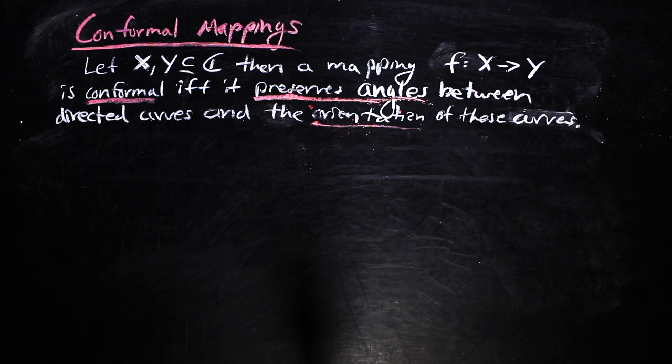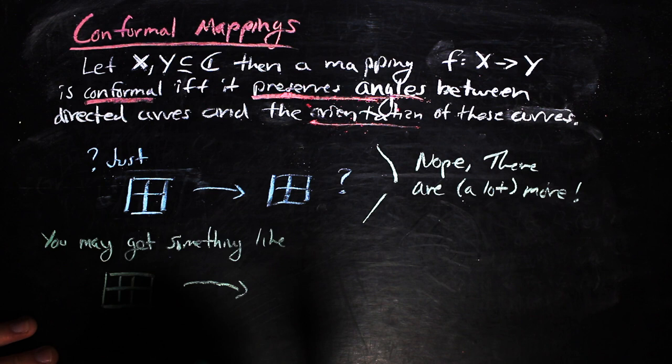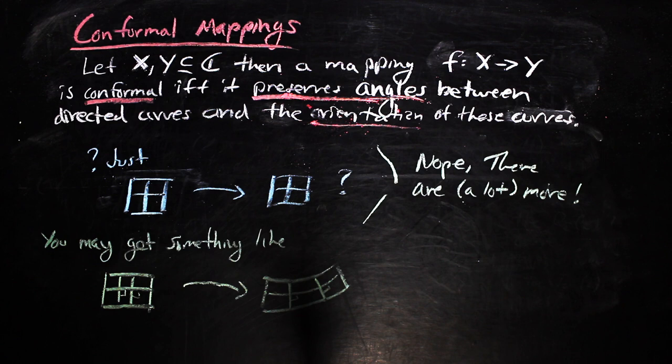At first glance, you might think that the only conformal mapping is the constant one, i.e. it takes the grid to the grid. However, the key thing about this is that the preservation of angles is local. So, you could have something like this, for instance. The idea of locality will be important later on, but first, we should talk about how you can make sure a function is conformal, just to make sure that all of our bases are covered.